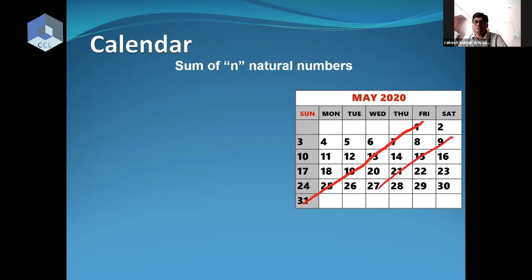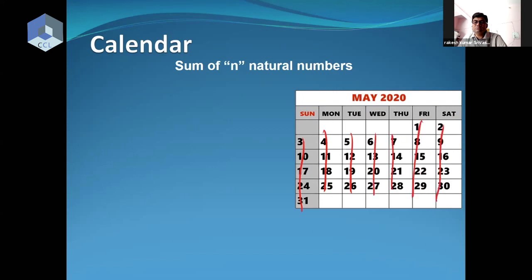This arithmetic progression — everything is in arithmetic progression. It doesn't matter. This line is also arithmetic progression. This more diagonal line — 26, 21, and 16 — they are also in arithmetic progression.